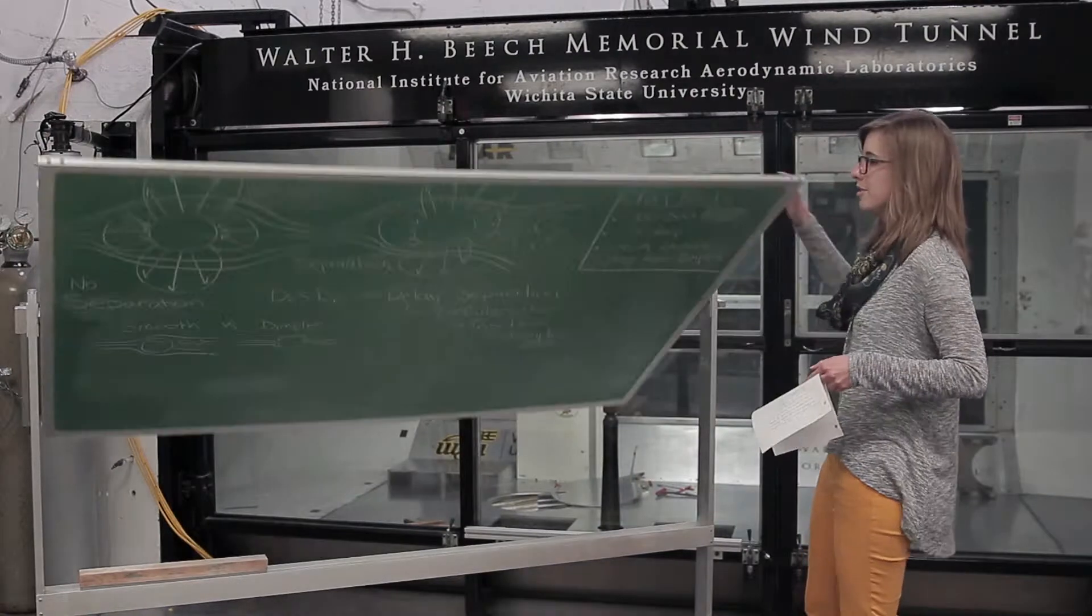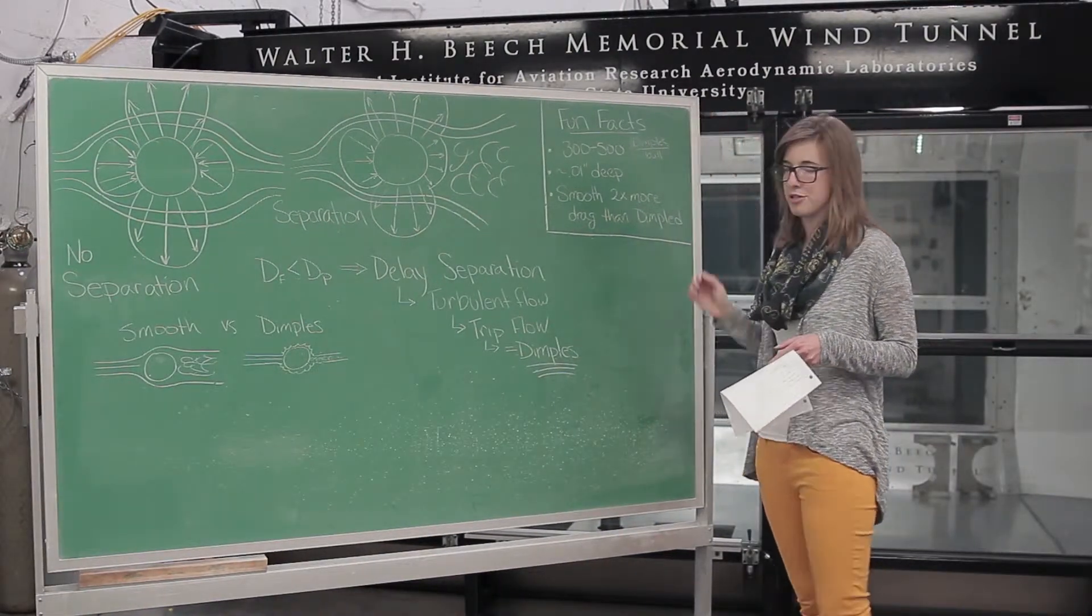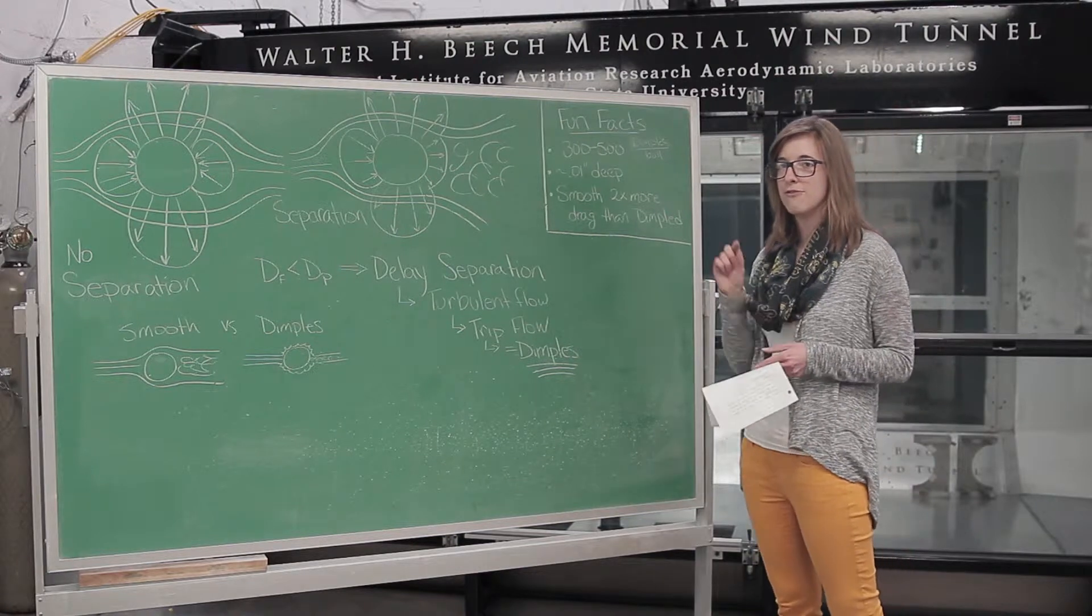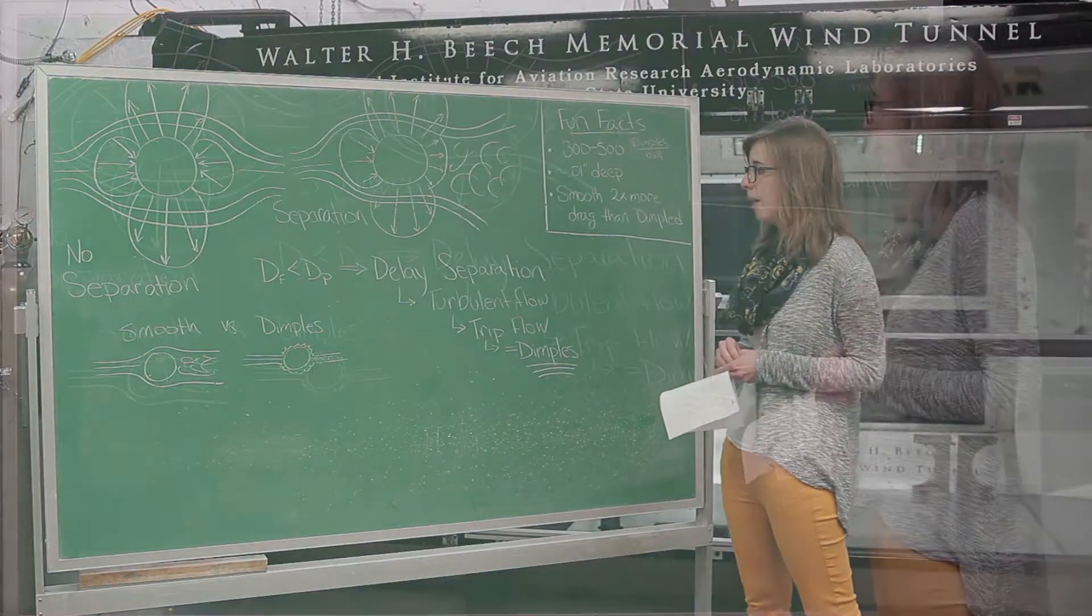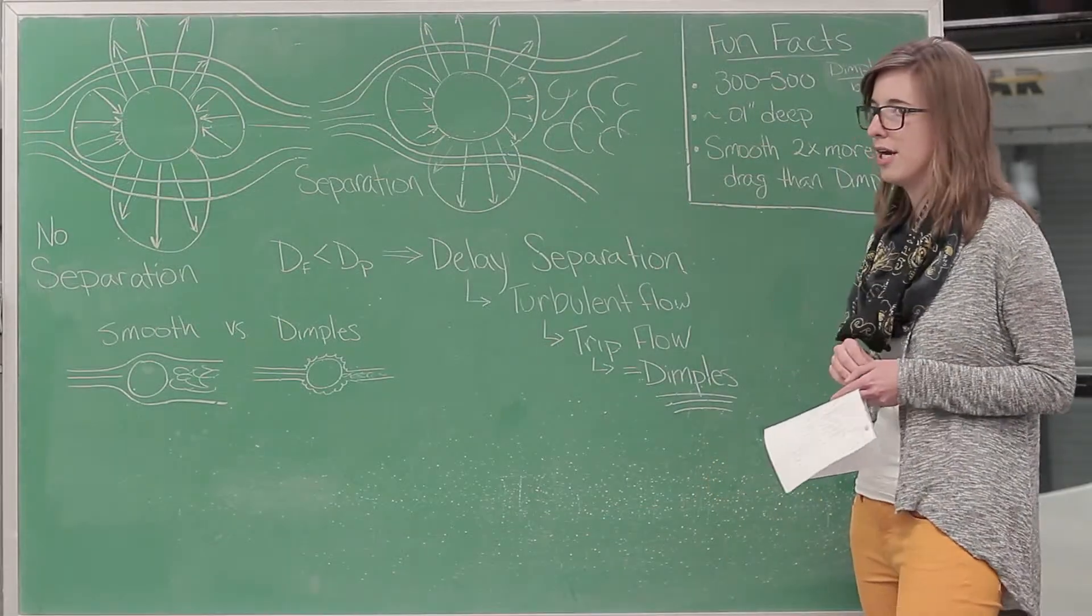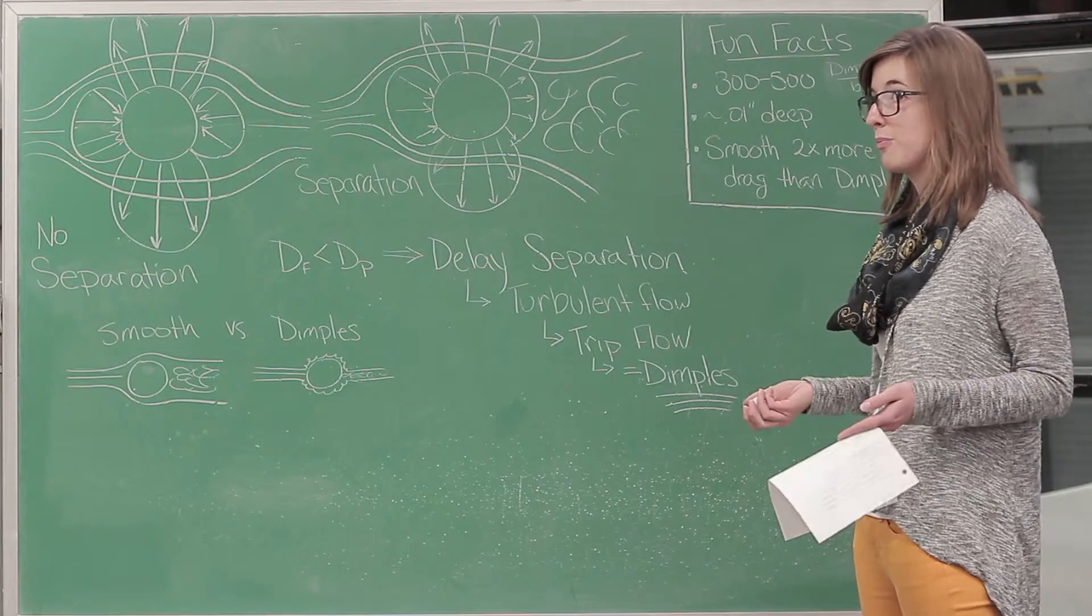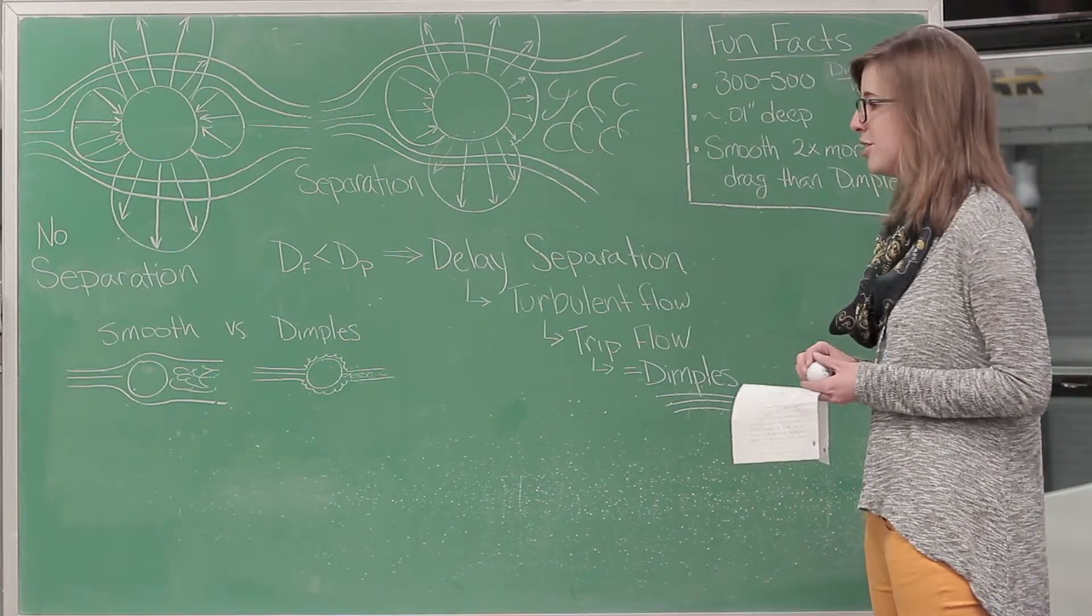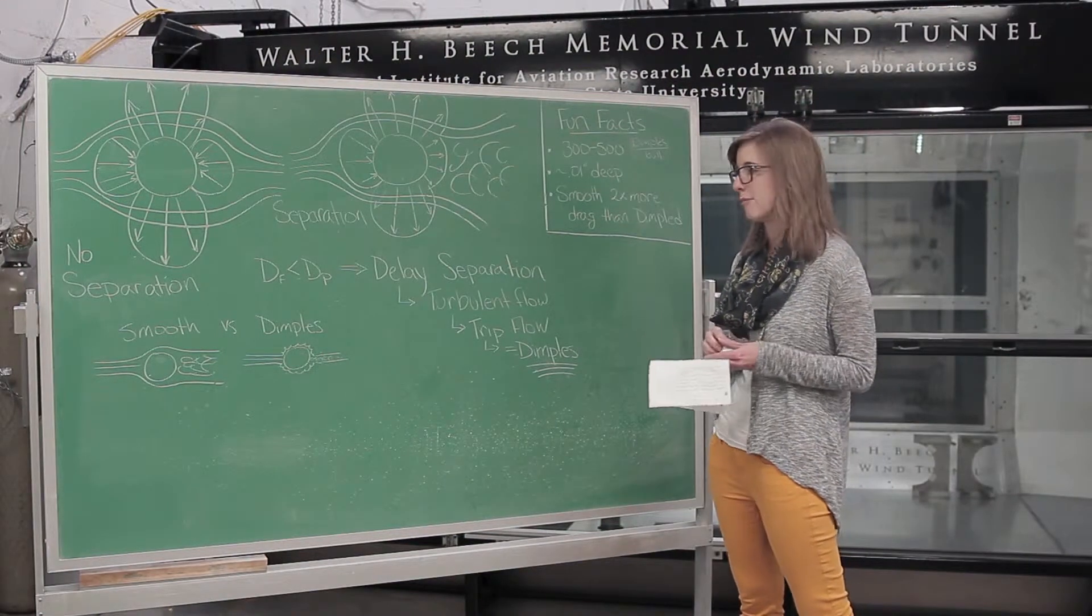We want to reduce pressure drag as much as possible, which means we can afford a little bit of extra drag from the turbulent as opposed to the laminar. You want to delay that separation, which means you need some turbulent flow, which means you need to trip the object. Tripping is just making that laminar flow turbulent, and that turbulent flow will never go back to laminar.